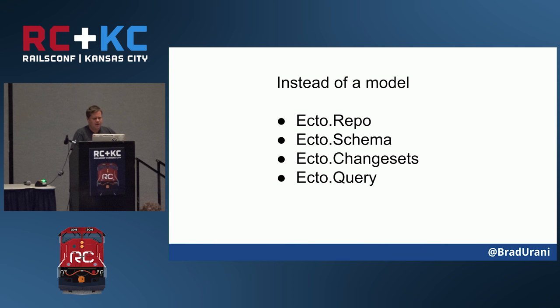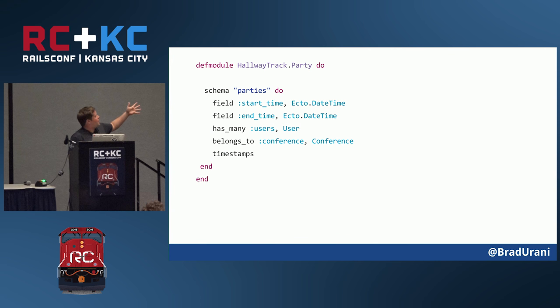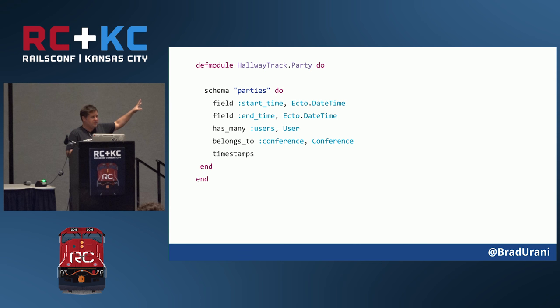Here's the schema — in the model file for party you have to define the schema. We know in ActiveRecord you don't predefine the fields, it's all dynamic. In Ecto you actually have to define them. It's got has_many and belongs_to in the same way, but it's explicit — you're telling Ecto what fields you have, which turns out to be convenient even though it's a little more boilerplate.